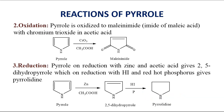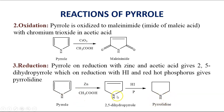Other reactions which Pyrrole undergoes include oxidation. Pyrrole is oxidized with chromium trioxide in acetic acid to give maleimide, which is an imide of maleic acid. Similarly, Pyrrole on reduction with zinc and acetic acid gives 2,5-dihydropyrrole, which on further reduction with HI and red phosphorus gives pyrrolidine. So Pyrrole on reduction gives pyrrolidine, whereas on oxidation it gives maleimide.